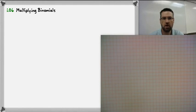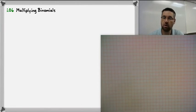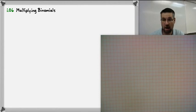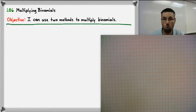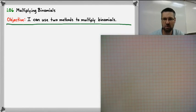Today we're going to be talking about multiplying binomials. Last time we talked about adding and subtracting polynomials. Today we're going to narrow our focus down to what's called a binomial and then how to multiply two binomials. Our objective is to be able to multiply binomials. I'm going to share two different methods, but we're really going to focus on one — the more analytical way that you'll be expected to use regularly in future math classes.